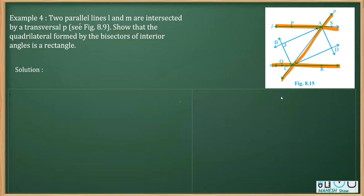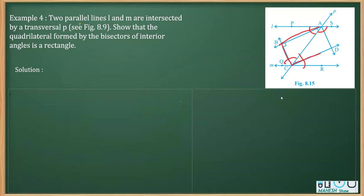Before that, you should also remember what the bisectors are here. The bisectors drawn here are the bisectors of the interior angles. These are the interior angles, and these are their bisectors. So the quadrilateral formed by the bisectors of these interior angles is what we need to prove is a rectangle.